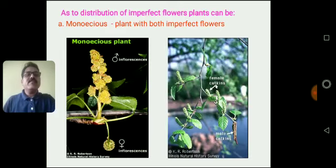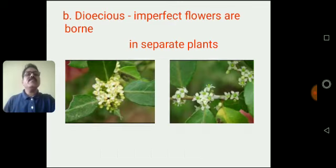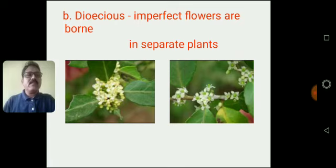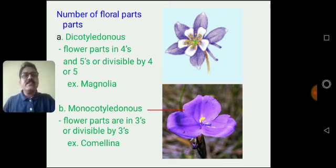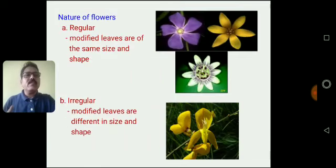This is the monoecious plant — both reproductive structures are present in a single plant. In dioecious plants, both the male and female flowers grow on different plants. Then, the structures of the floral parts of the dicotyledonous flower and monocotyledonous flowers: the dicotyledonous flower consists of four to five petals, while in monocots they may be in trimerous form — that is two to three sepals or petals.